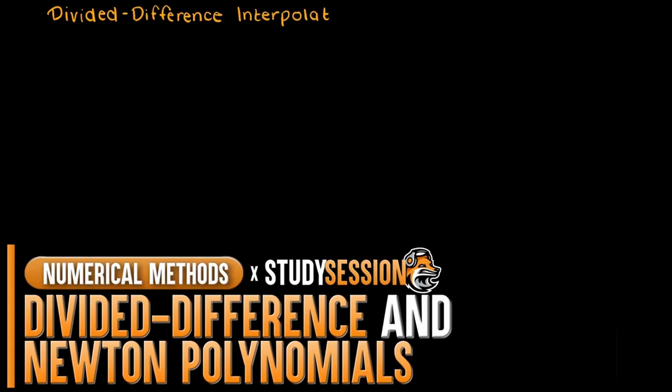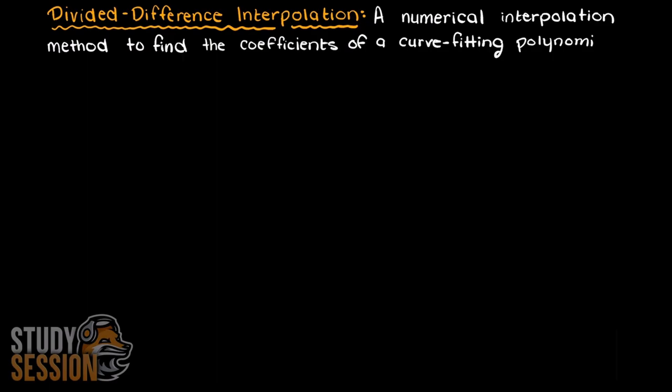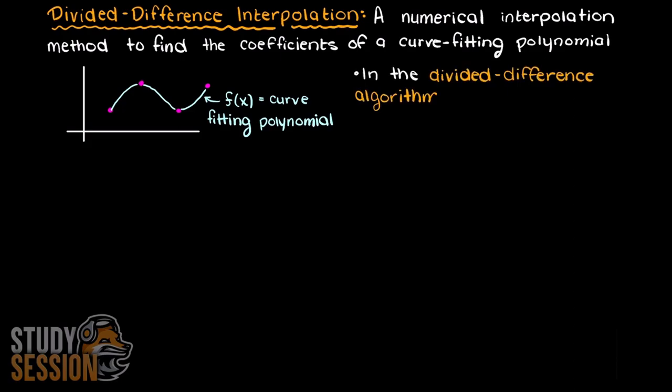In this video we are going to be talking about what divided difference interpolation is and Newton polynomials. The divided difference interpolation algorithm is essentially a method to find the coefficients for a curve fitting polynomial. When interpolating in numerical methods, we are trying to find a function that will fit through all of our data points and describe the behavior of our discrete data in a continuous function rather than given discrete data points.